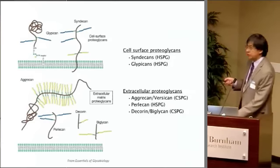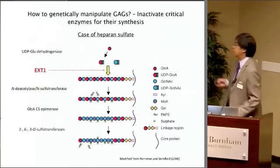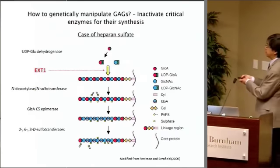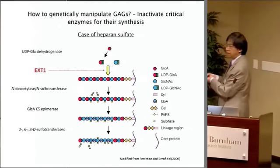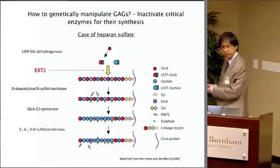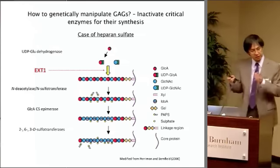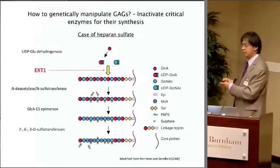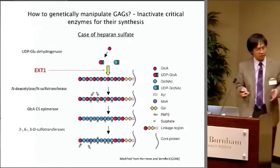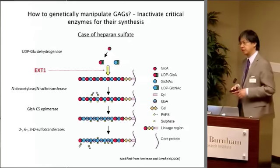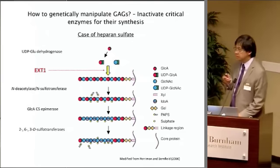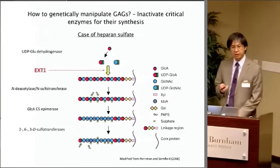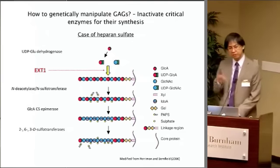I can skip the heparan sulfate proteoglycans overview. EXT1 is the gene I'm going to talk about. As Jeff said, this is a key enzyme to elongate the heparan sulfate backbone. Without EXT1, there will be essentially no heparan sulfate produced. But this is a very clear-cut system — although brute force — to determine the function of heparan sulfate in vivo.